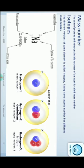The different versions of the same element are called isotopes. Isotopes have the same atomic number but different mass numbers.